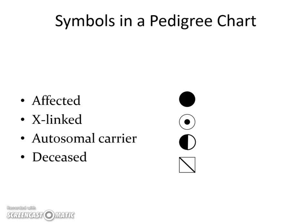So again, shading a square or a circle in is considered affected. When we talk about sex-linked traits, they put a dot in the middle. Carriers are shaded half, and then deceased individuals are crossed out to show they're no longer alive.